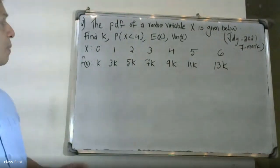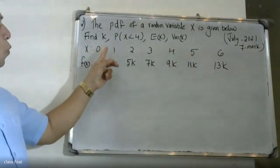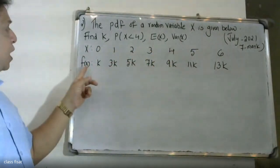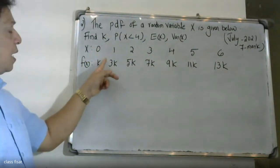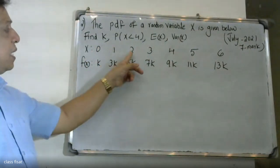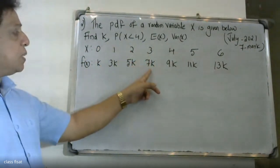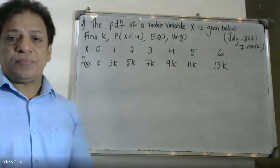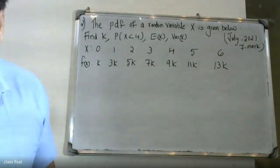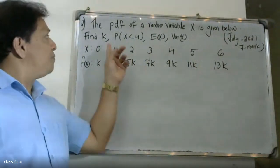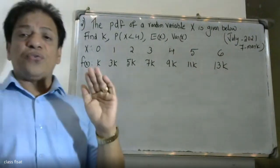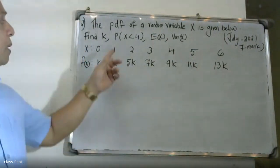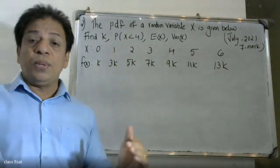The values of x are 0, 1, 2, 3, 4, 5, 6, and the corresponding f(x) values are k, 3k, 5k, 7k, 9k, 11k, and 13k respectively. We need to find the value of k and then solve for each part.